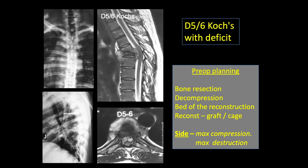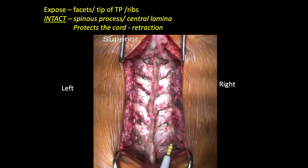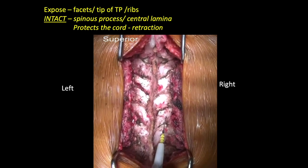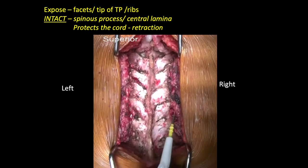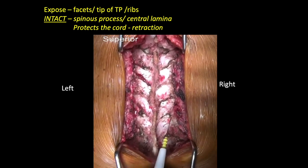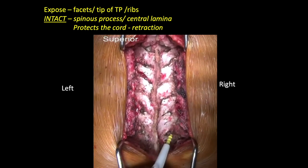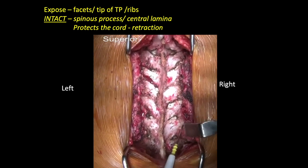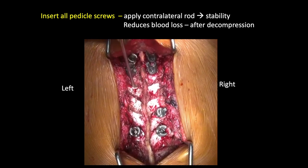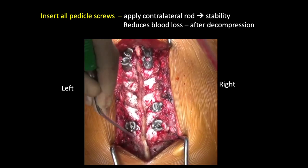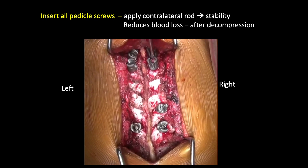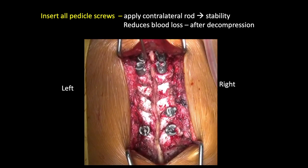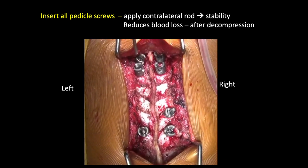I usually approach these cases from the side of maximum compression and maximum destruction. Going to the approach by central midline incision, keeping the midline structures intact, we expose the lamina, the facet joints, right up to the tip of the transverse process, and if required, the ribs are also exposed. I usually insert all the pedicle screws before, as it reduces blood loss after decompression, and insert a rod on the contralateral side to give stability.